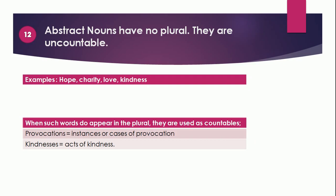Point 12: Abstract nouns — like hope, charity, love, kindness — have no plural form. But when such words do appear in the plural form, they are used as countable. For example, 'provocations' means instances or cases of provocation, and 'kindnesses' means acts of kindness. So abstract nouns generally have no plural form.